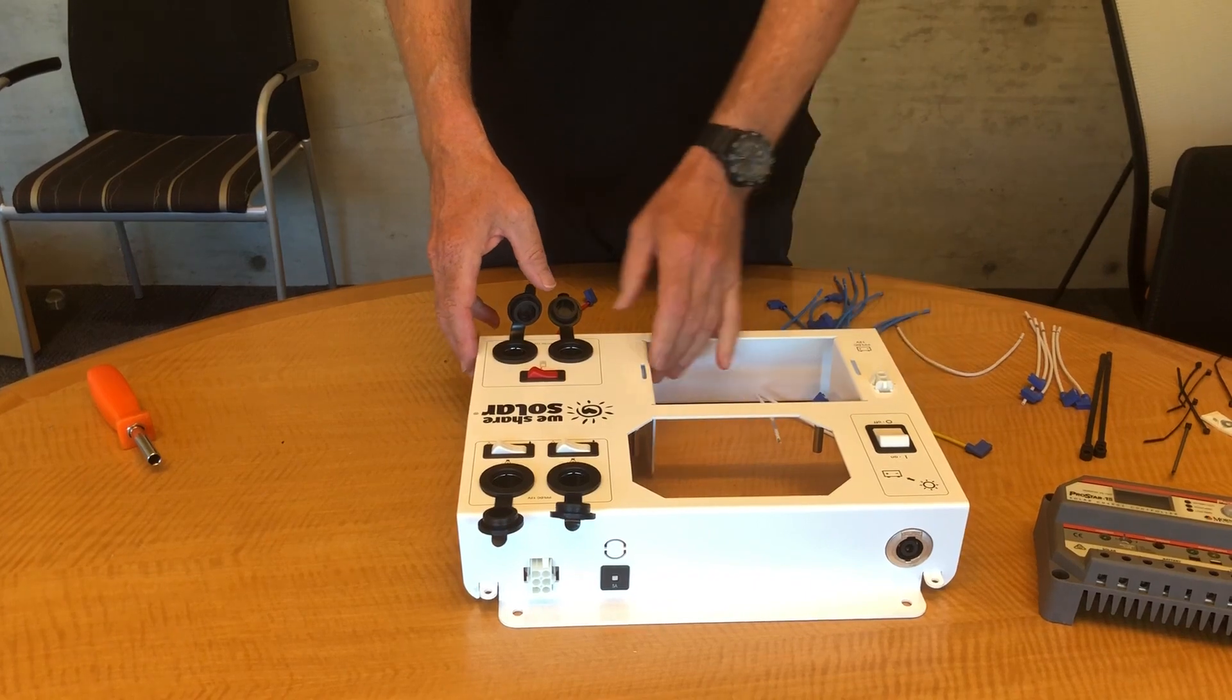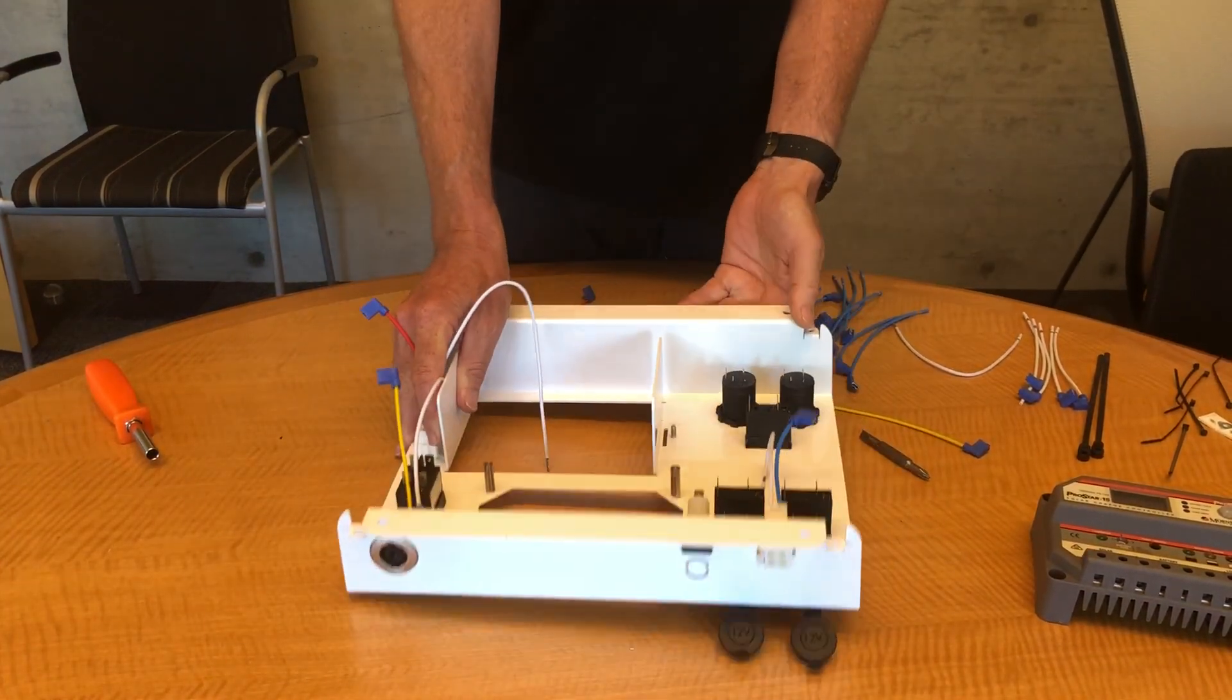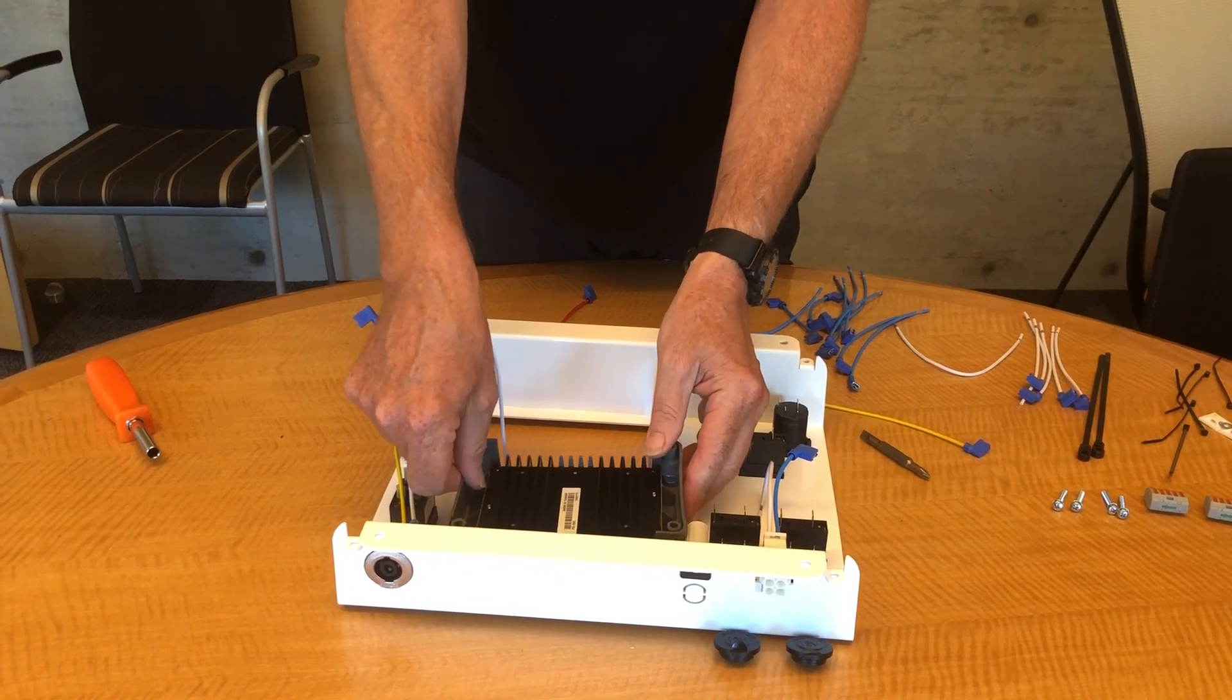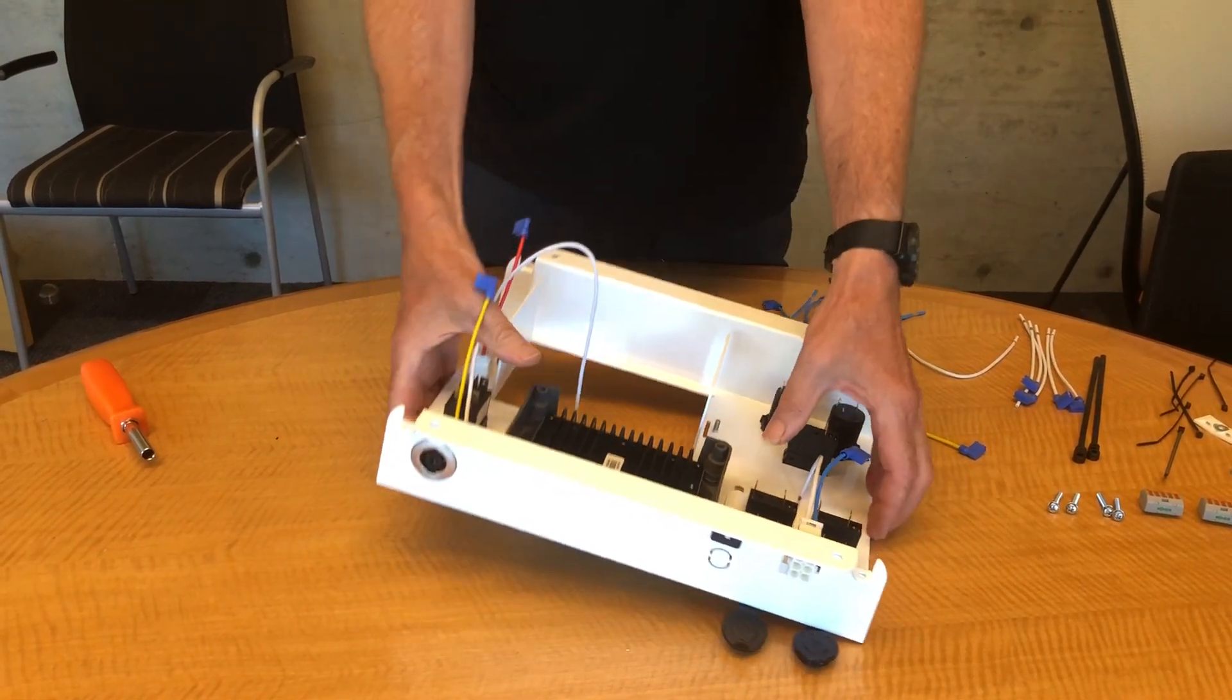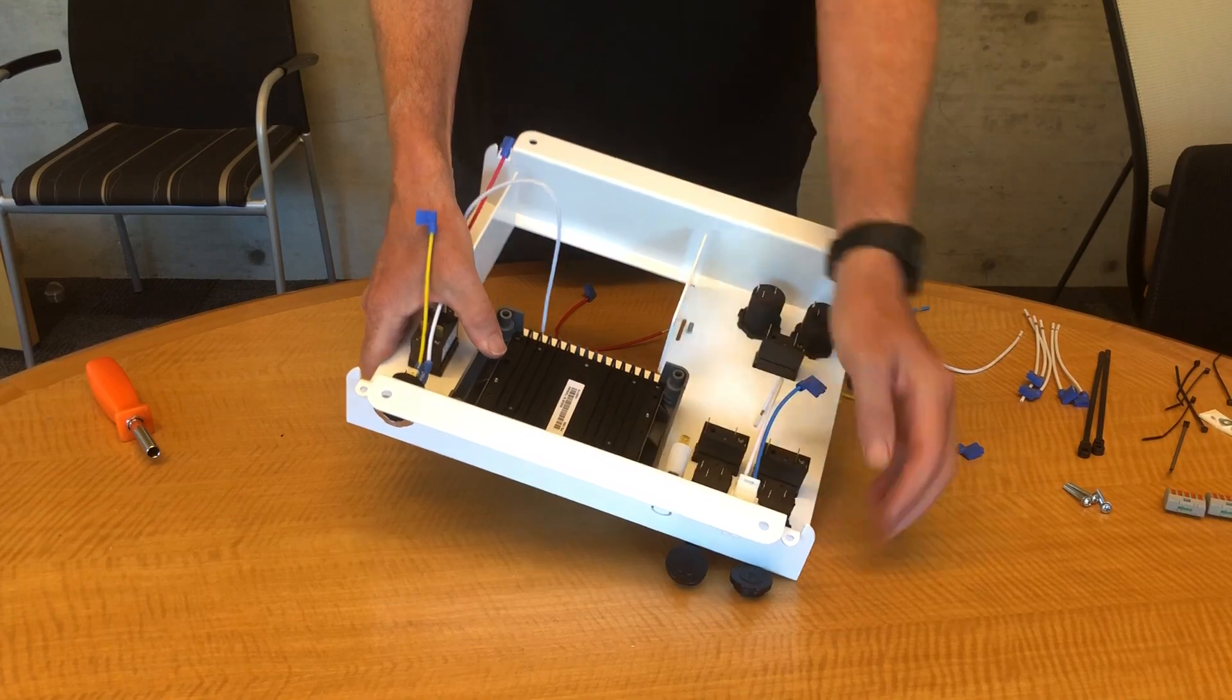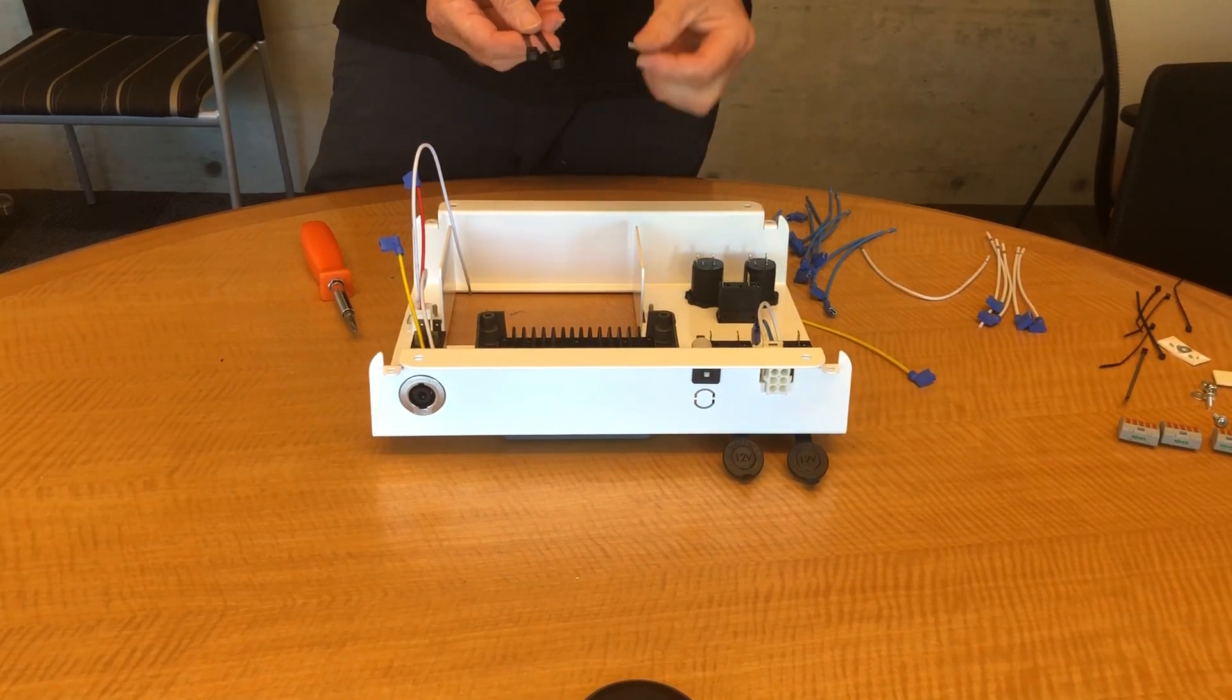And all we need to do is add the charge controller. So flip the board over, the chassis over. Drop the charge controller into place. And you're going to secure the charge controller with these longer screws. Put in the top screws first.